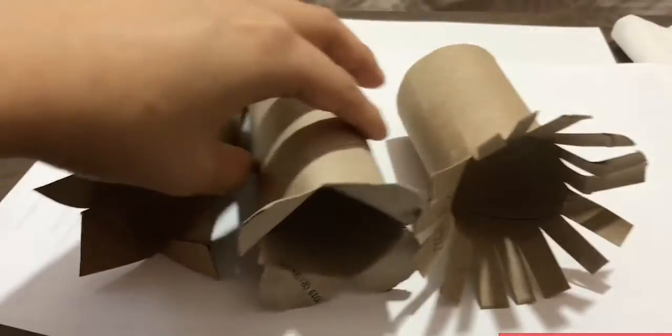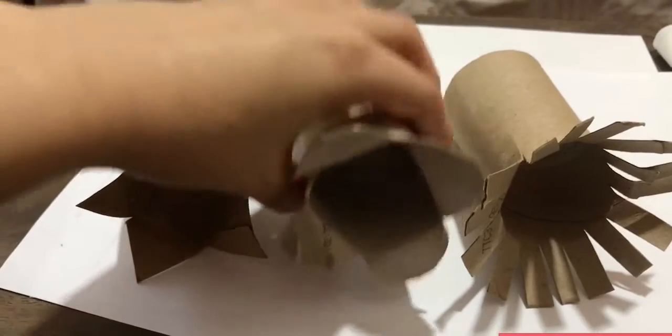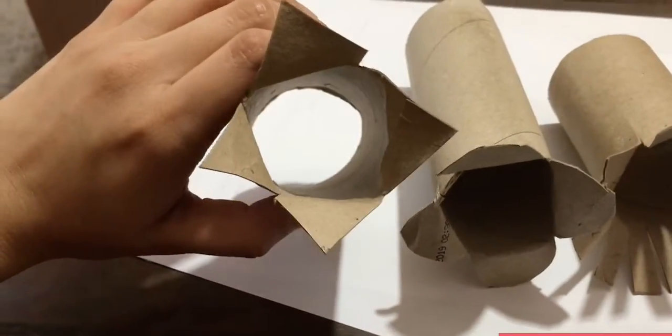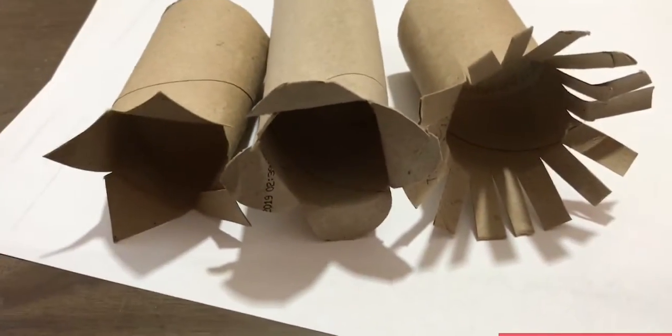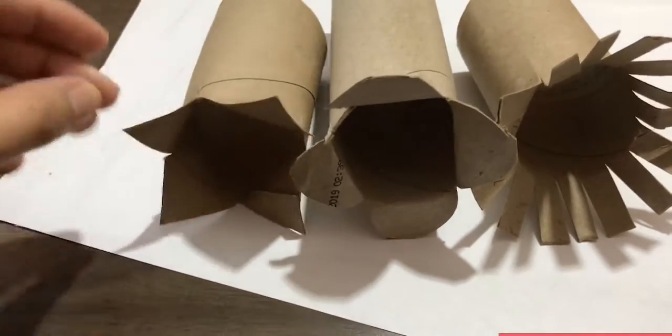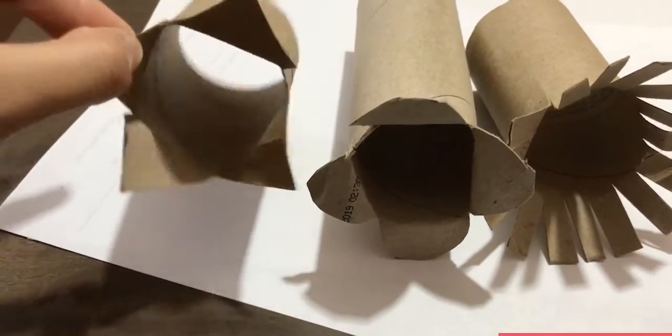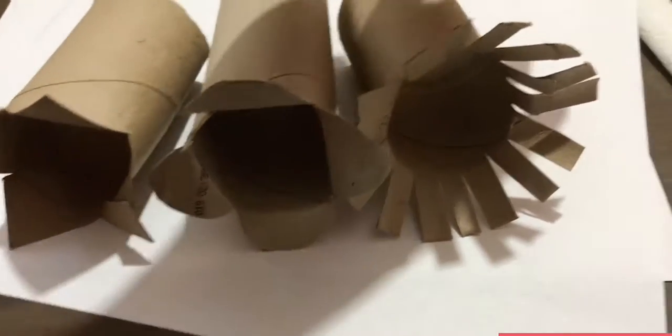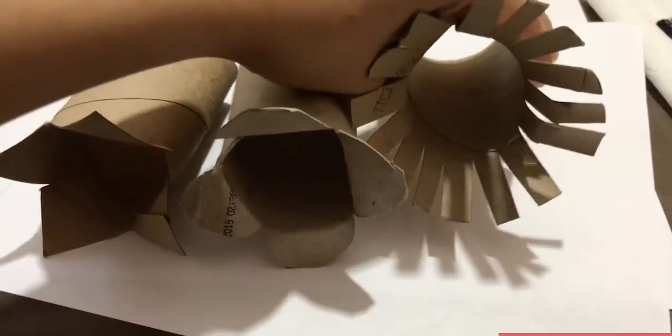I went ahead and cut three shapes. I did this one, this semi-rounded one, and this triangle one. If you haven't guessed, from the toilet paper rolls, we're going to create some flowers.